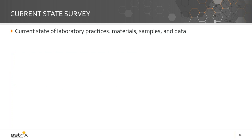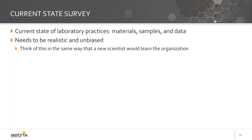Current state structure — what we're trying to capture here is the current state of laboratory practice. We're talking about materials, samples, and data. What we want to do is understand from the scientist's perspective — in their shoes — what they do with materials and samples and what they do with data: what data they generate, what data they consume from other people, what data they provide to other people, and the same flows with materials and samples.